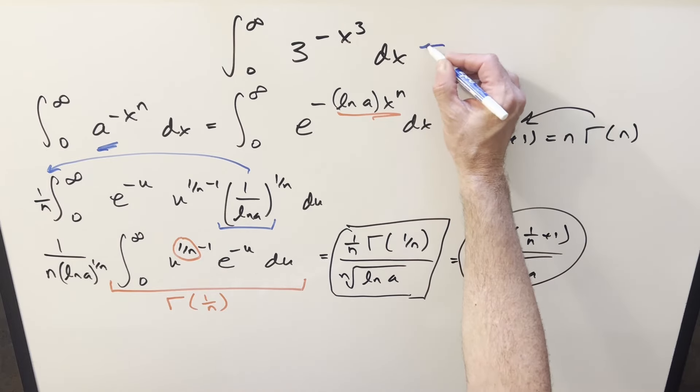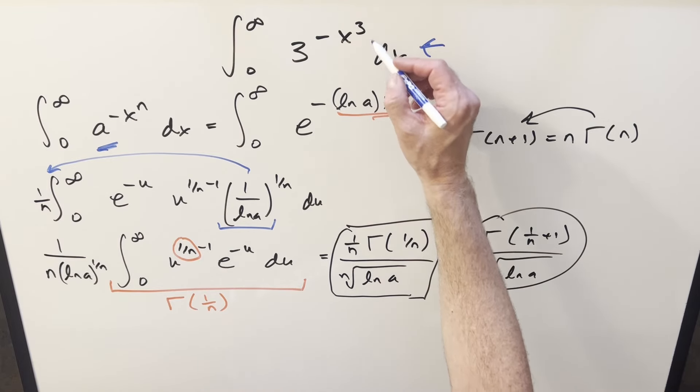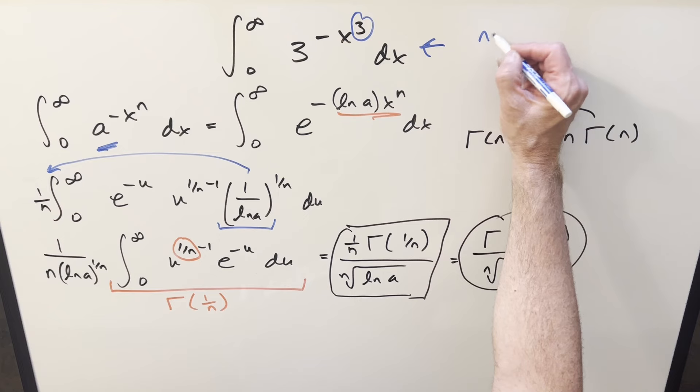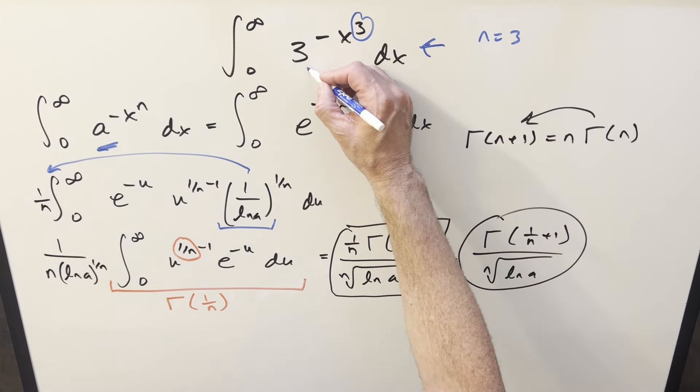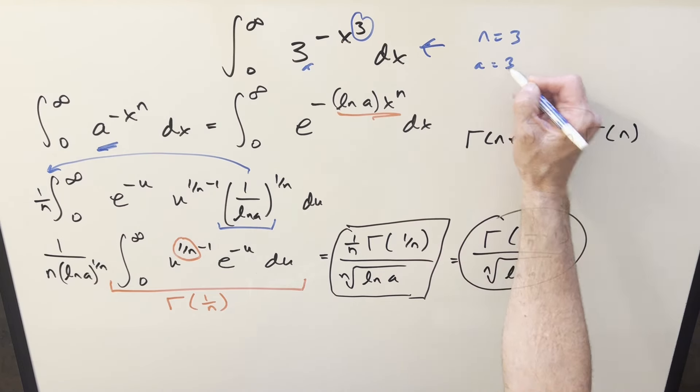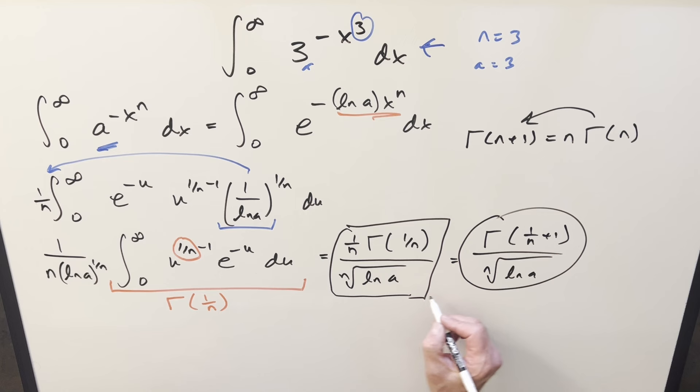So now getting back to our problem here, what we have is our n value is going to be just 3 and our a value is going to be also 3. So plugging into our formula, I think I'll use this one here. We can write this as, I'll write it as gamma 1 third over, we'll bring the n to the denominator over 3 cube root natural log of 3 and that's it.